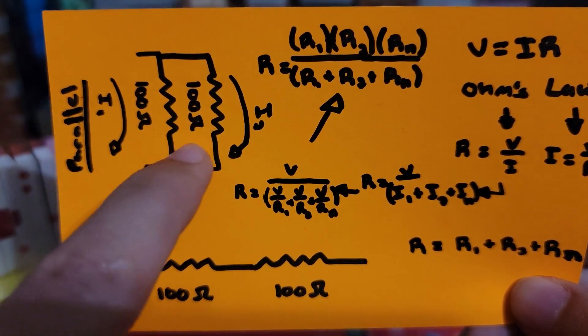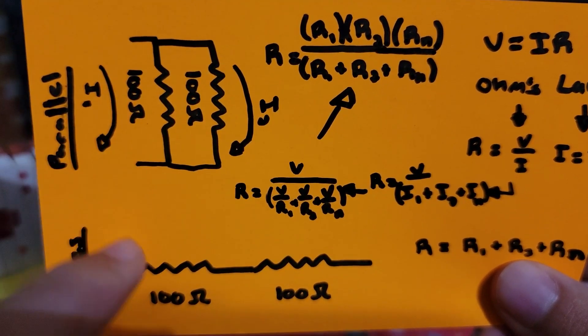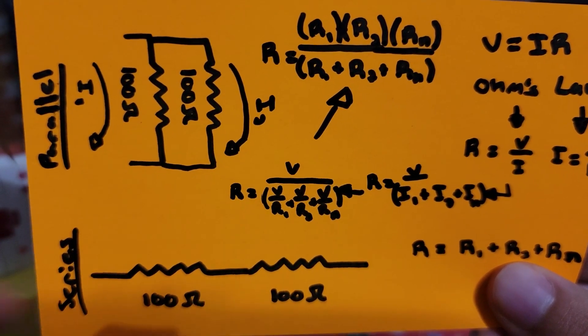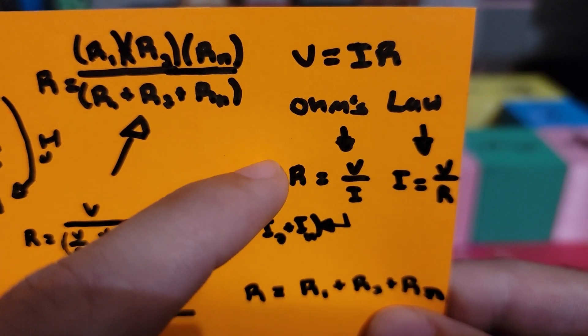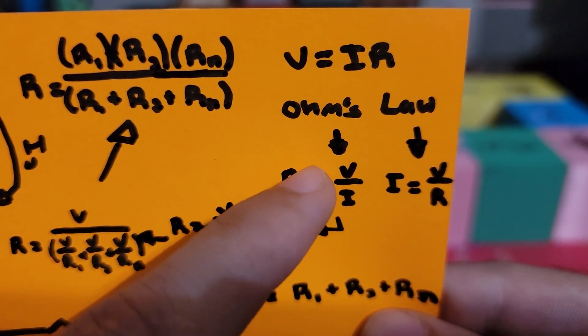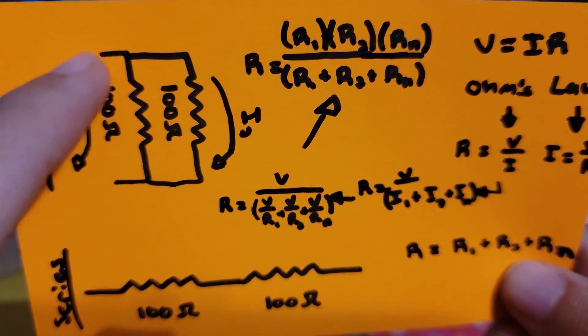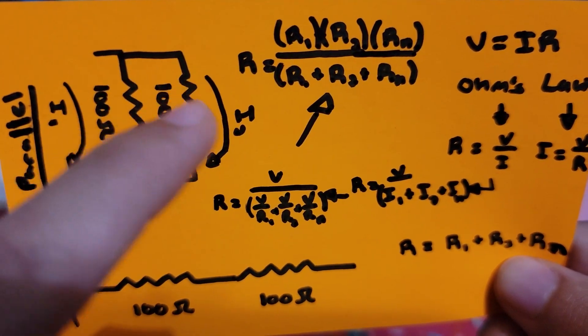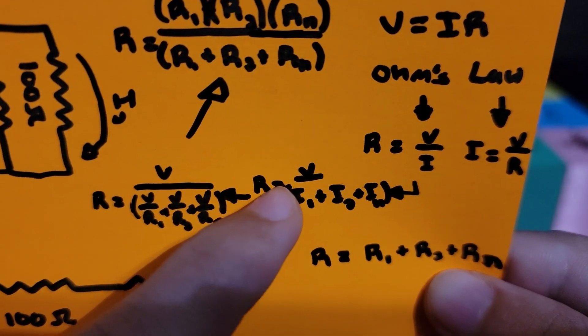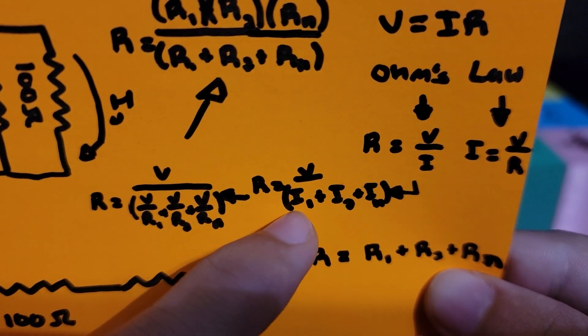Now rearranging Ohm's law to solve for resistance, you get the equation of voltage over current. Since the current in this equation will be the net amount of current from the two circuits, the new resistance will be equal to voltage over the first current plus the second current plus any other currents denoted by i_n.